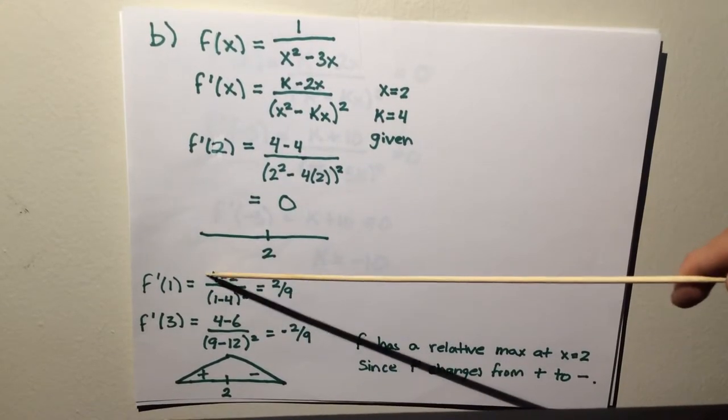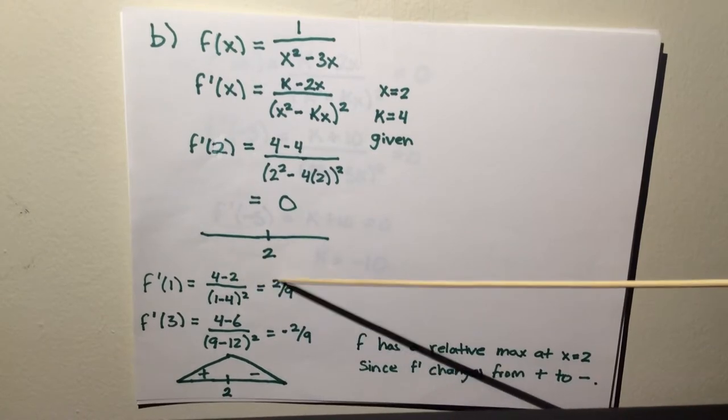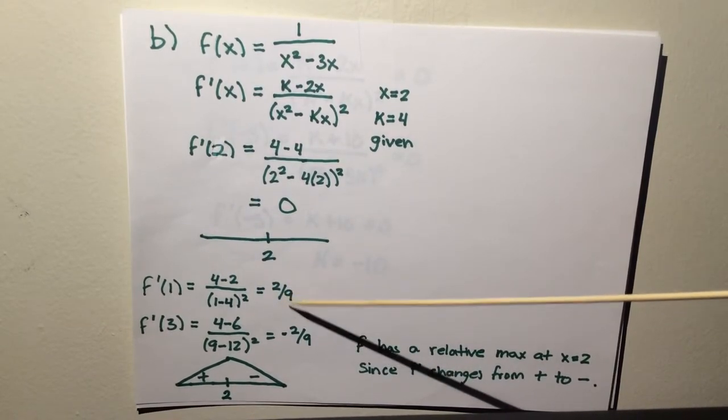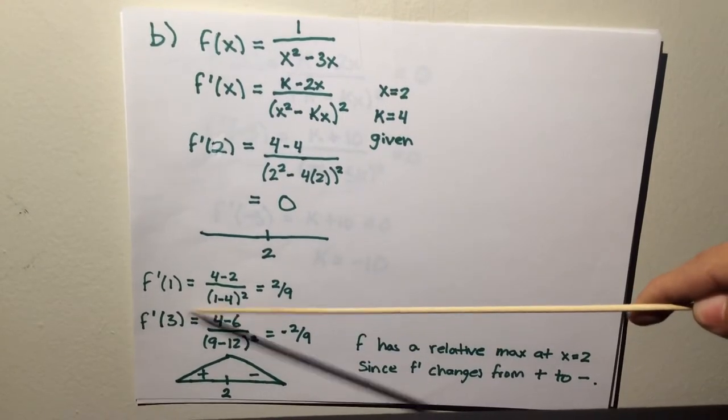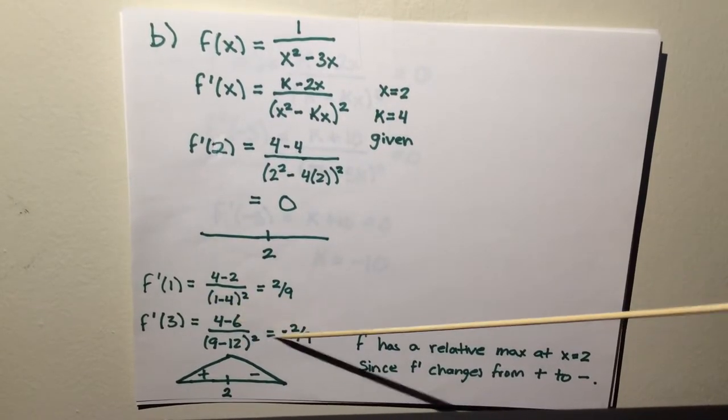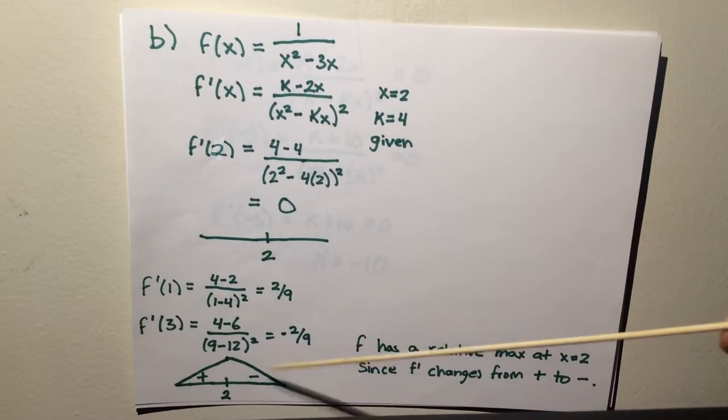I plugged in 1 to f prime. Once I solved, I got 2 ninths, so that's positive. Then I tested 3. f prime at 3 equals negative 2 ninths, which is negative.